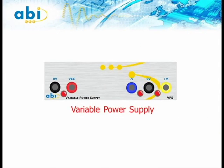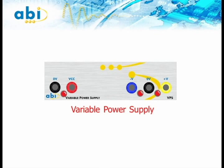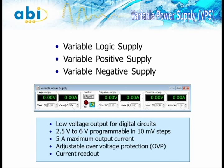The last module is the Variable Power Supply. The main function of the VPS is to provide the necessary supply voltages to the unit under test. The modules have three variable voltage outputs and offer over-voltage protection and current limitation.